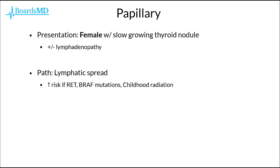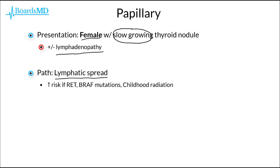In the case of papillary cancer of the thyroid, our classic patient is going to be a female with a slow-growing thyroid nodule. These patients may present in some cases with lymphadenopathy on physical exam. This is in part because papillary cancer of the thyroid moves via lymphatic spread. Patients are at an increased risk for papillary cancer of the thyroid if they have RET or BRAF mutations, or if they have a history of childhood radiation, especially to the neck.